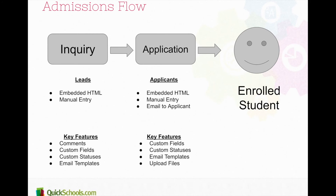In summary, the admissions module within QuickSchools supports inquiries and applications. Inquiries are for your leads — you can create new entries via the HTML embedded code on your website, or manually enter a record. For applications, you also have the embedded HTML and manual entry, but in addition, you have the ability to email the applicant and have them fill in the form that's already been started on your end.